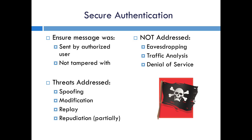Secure authentication is basically trying to prevent spoofing, where you could pretend to be the real master. It makes sure you can't modify a message and change it, like changing a read into a control, or changing a point that's going to be acted on in a control message. It also makes sure that you can't replay a message — you can't record what a control message looks like and then send that same control a week or a few days later.